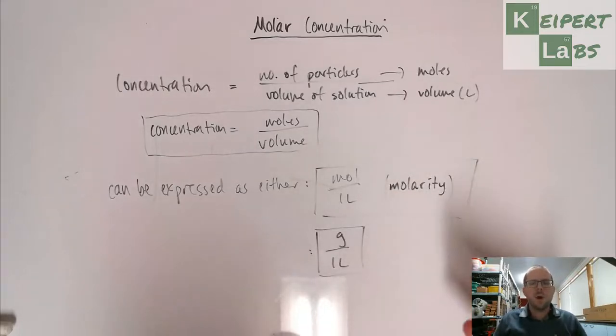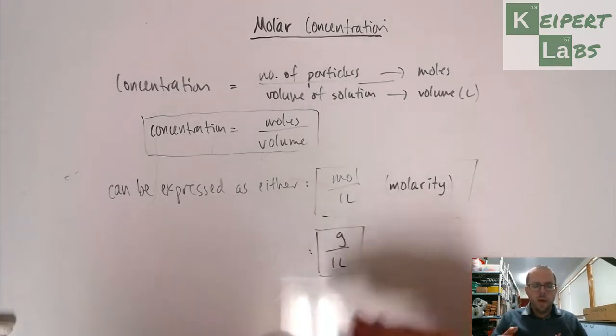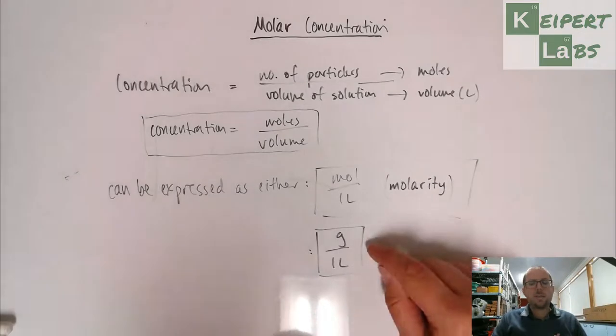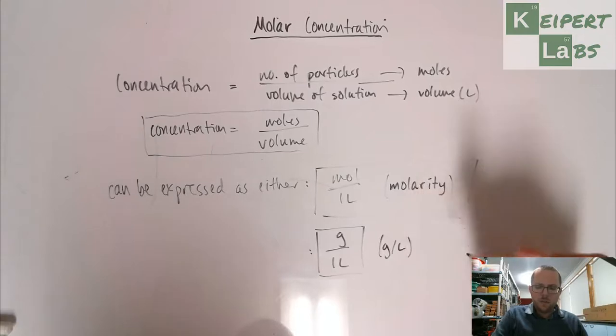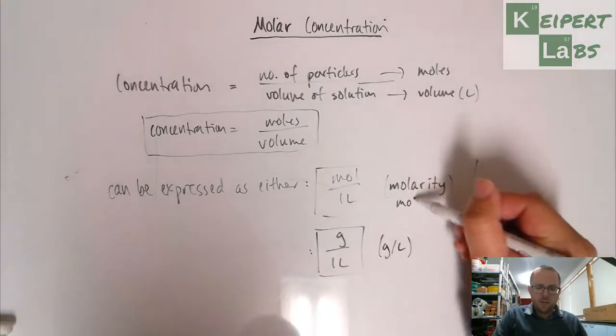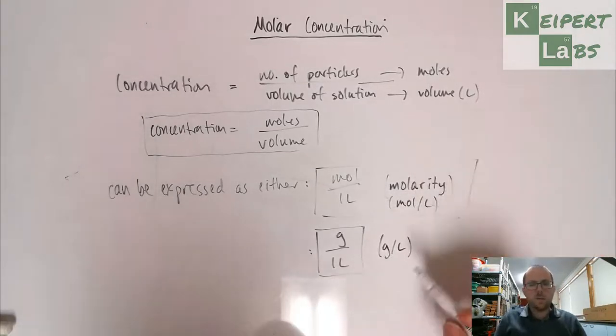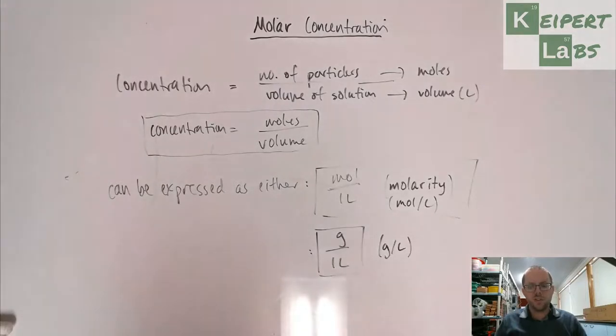If you just talk about moles to people on the street, they're probably going to be thinking either about skin kind of blemishes, or small furry rodents. So we can use the units of grams per liter. Grams per liter is an everyday unit of concentration that people can use.